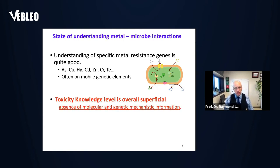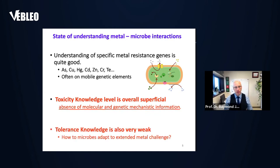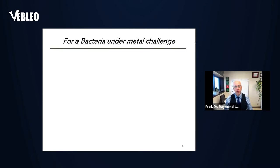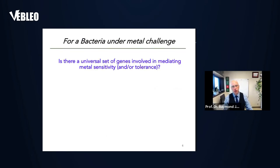What is less understood is that after 20 years studying metal resistance genes, I actually didn't know how the metal was toxic to the organism. How poorly we understand the genetic and molecular mechanisms of toxicity of metals to bacteria. We also don't know how bacteria survive extended challenge very well. So for bacteria and metal challenge, we started to ask: is there a universal set of genes involved in mediating metal sensitivity or tolerance, or are there unique genes for each metal?